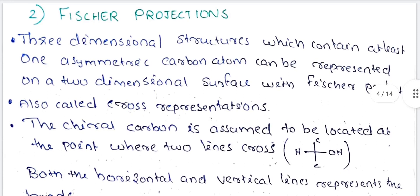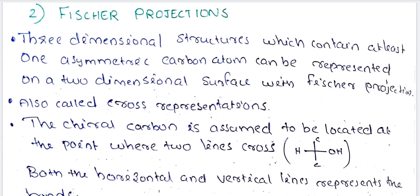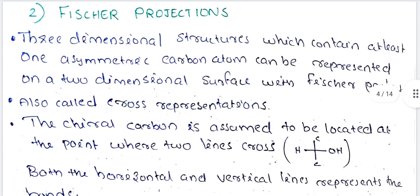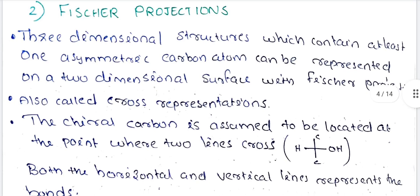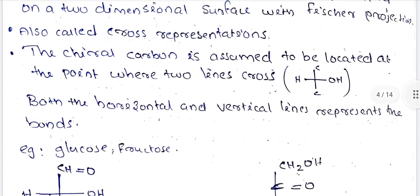What we are doing here is Cross Representation. A cross consists of two lines intersecting — like a plus sign or a multiplication sign. The chiral carbon is assumed to be located at the point where the two lines cross.